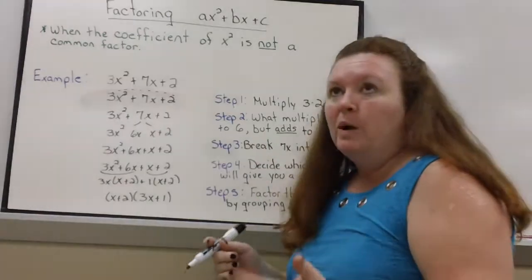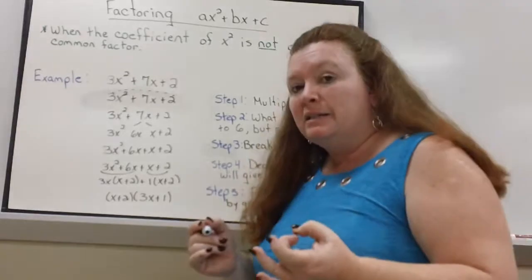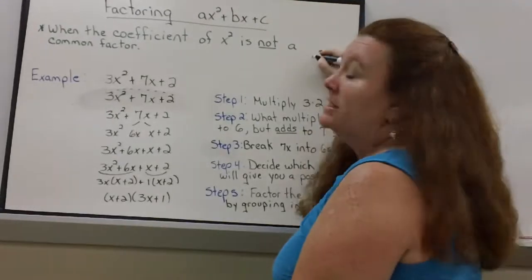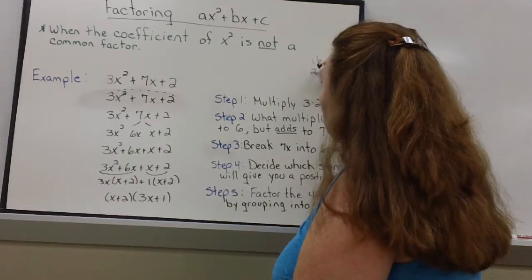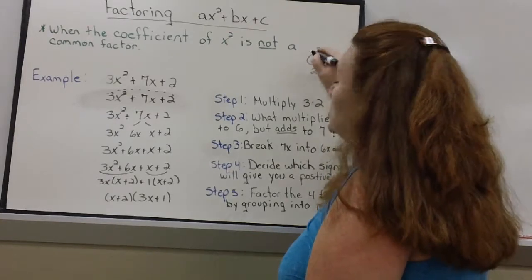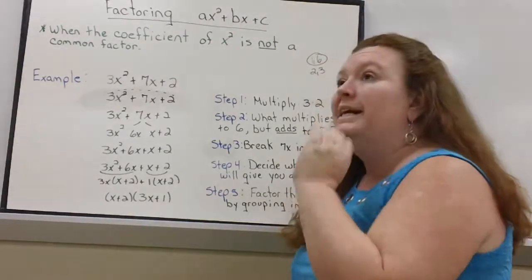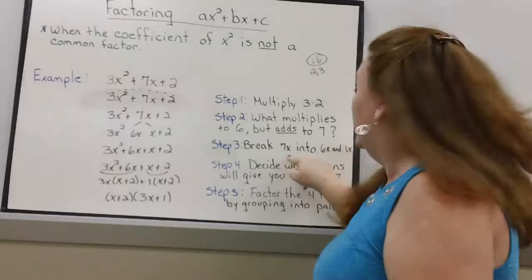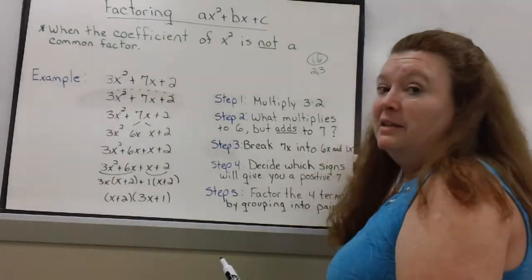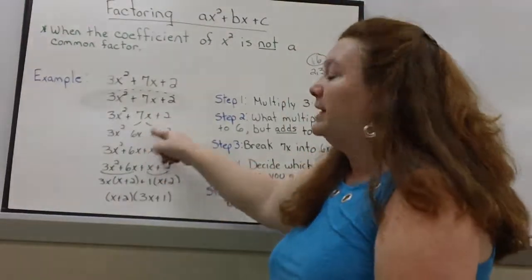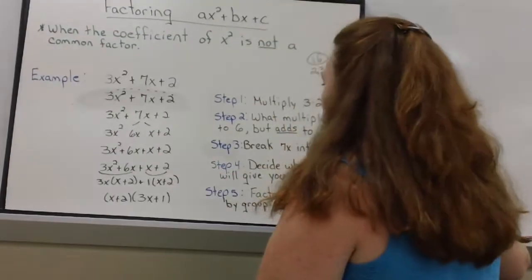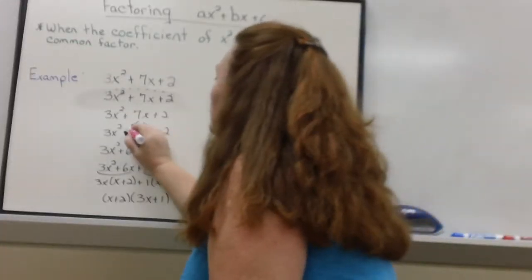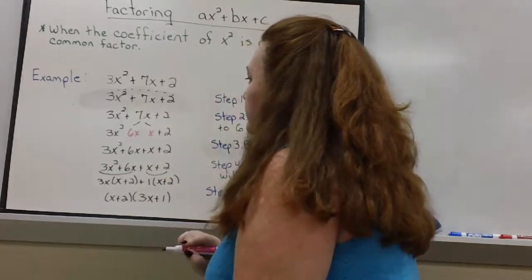Well let's see. What multiplies to give me 6 but adds up to 7. I'm going to use the space here for my work. 6 is 1 times 6 or 2 times 3. And these 2 add up to 7. So instead of putting that in parentheses I'm going to break the 7x into a 6x and a 1x. So that's what I did right here. I'm going to break the 7x into a 6x and a 1x.